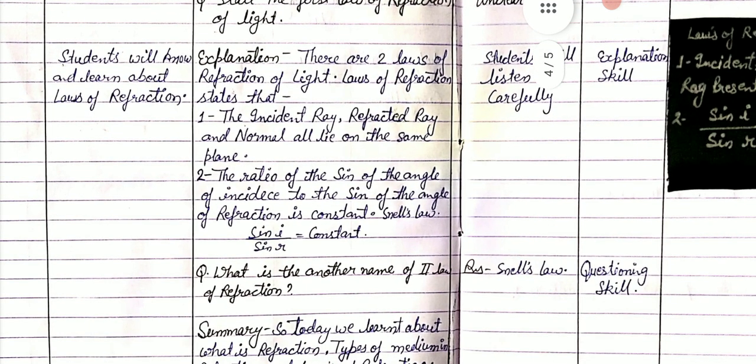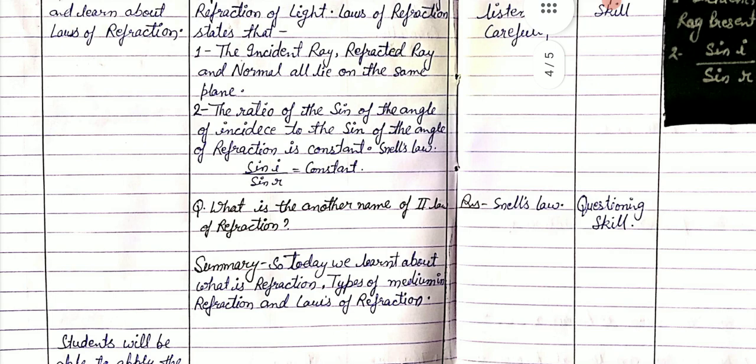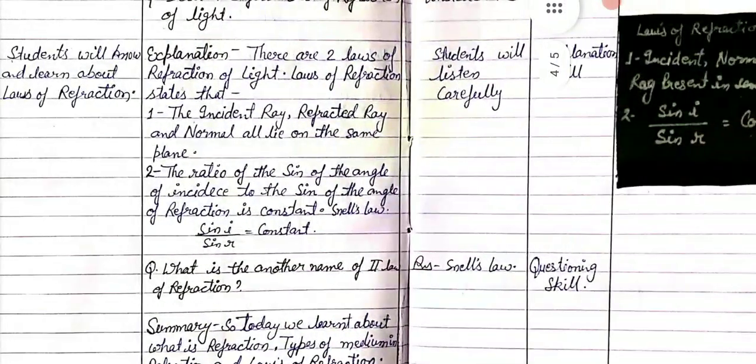Sine i upon sine r is equal to a constant. After that we question: what is another name for the second law of refraction? Student answers: Snell's law. This is our blackboard work.